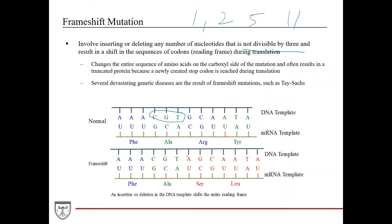For example, inserting an adenine between a thymine and guanine in DNA results in a uracil being inserted in the mRNA between the adenine and cytosine. This shifts the entire DNA sequence by one nucleotide, shifting the entire mRNA sequence, and as a result you're changing every codon from that point on. Instead of arginine, now you have serine; instead of tyrosine, you have leucine — and so on. By shifting the entire sequence forward, you potentially change the protein structure and function.